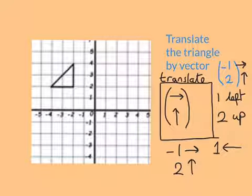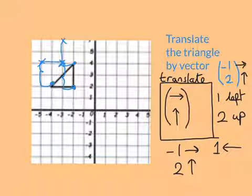So I'll do that. I'll choose a point. I'll go one left and two up. My new point. Same for this. One left and two up. And the same here. One left and two up. And then I will draw my new triangle. There. Of course, you would use a ruler. See if you can now give that a go.